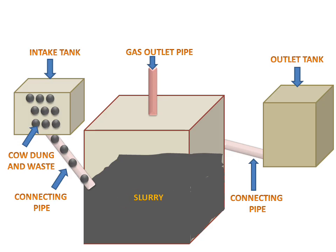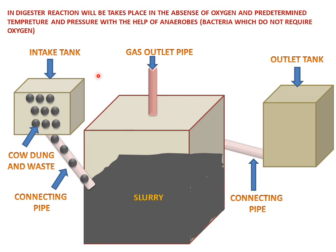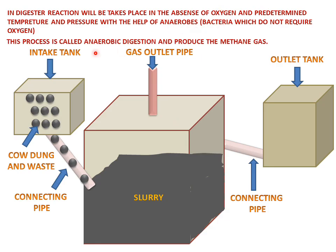These particles will go to the digester and be collected as a slurry. In this slurry, a process takes place in the absence of oxygen, which is called the anaerobic process. Anaerobes are bacteria which do not require oxygen, so this anaerobic digestion process takes place with the help of these bacteria.